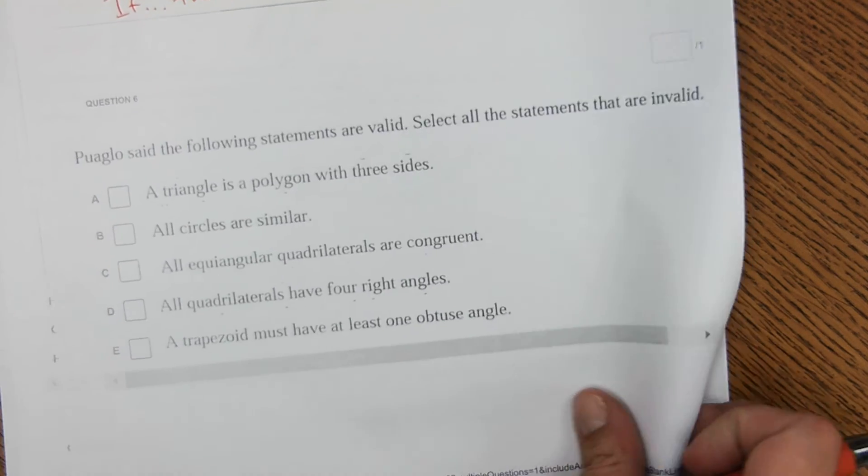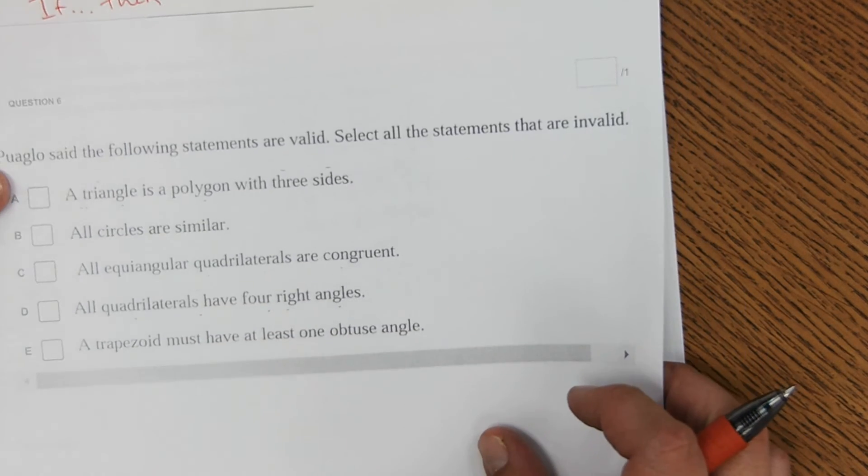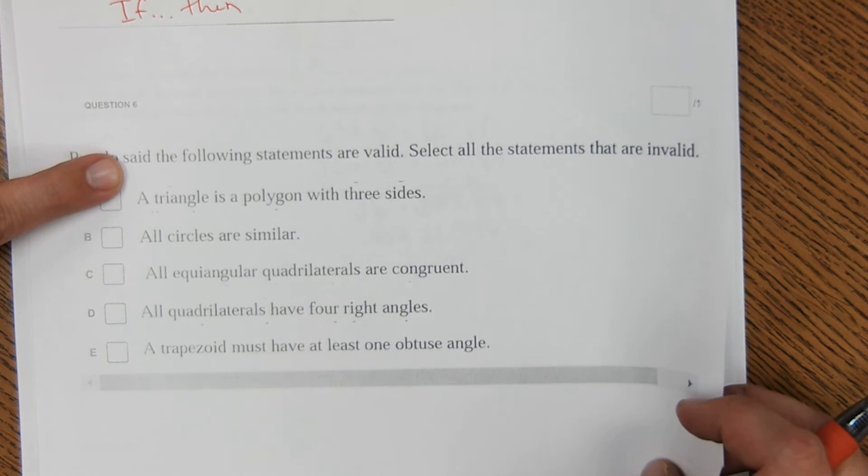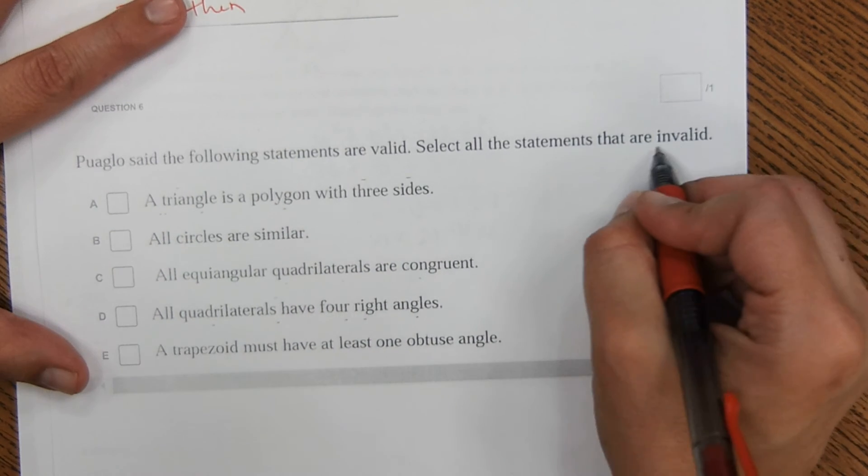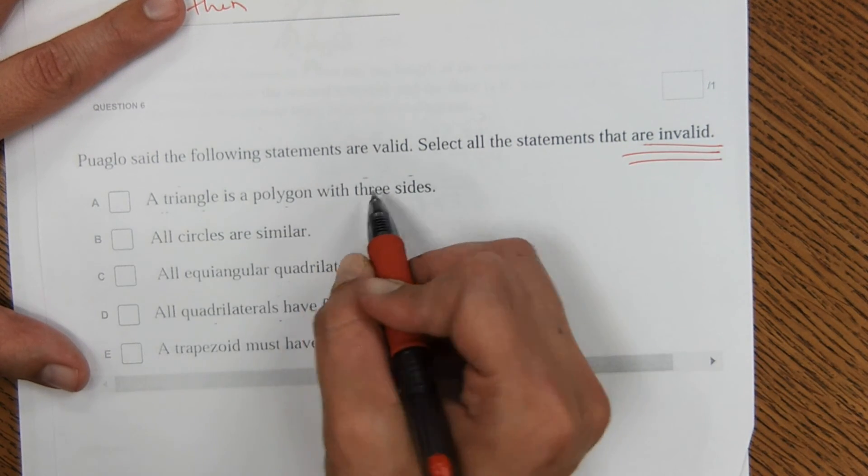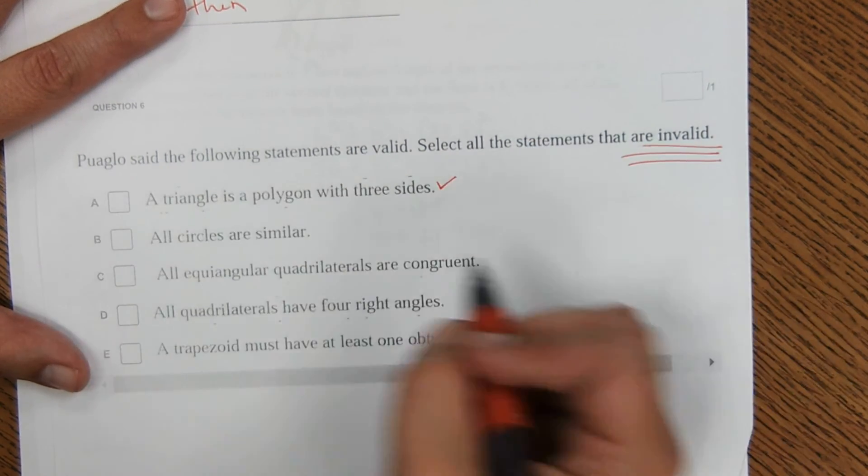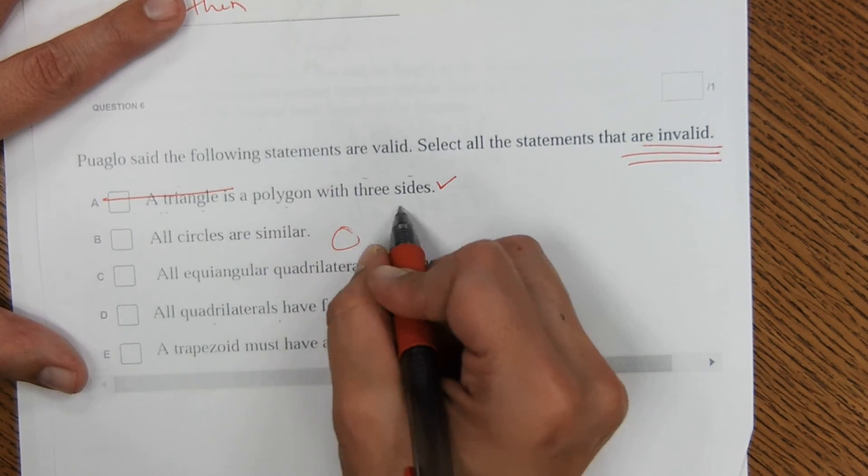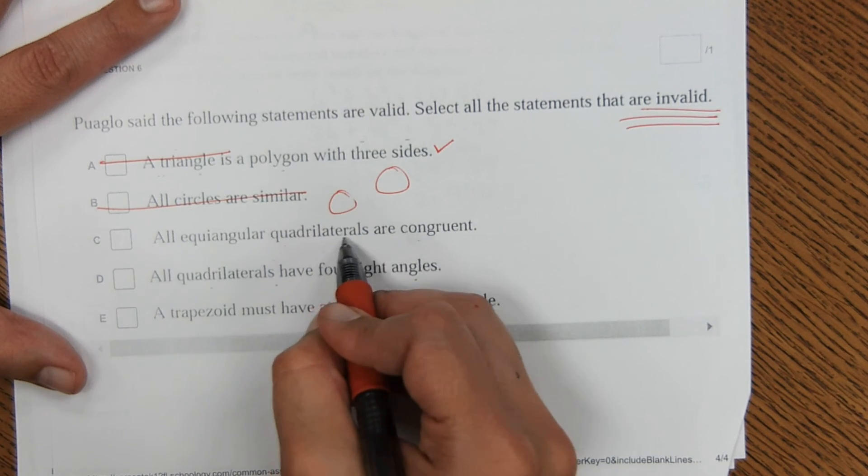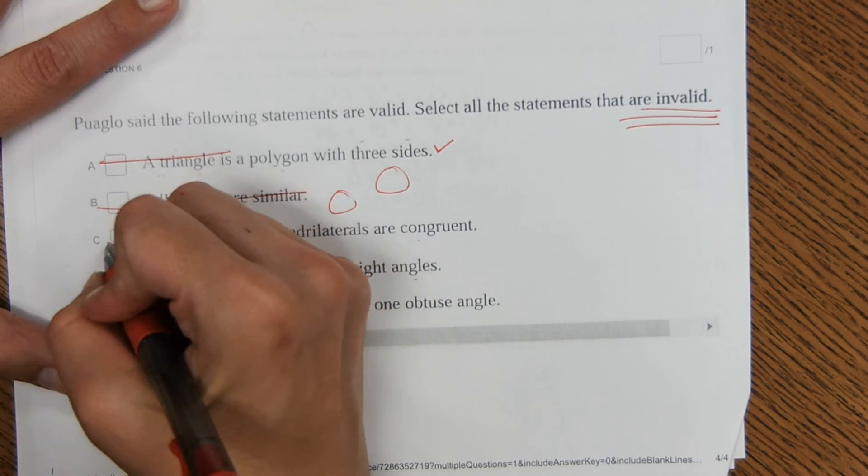Okay, and the last one of this entire series, Mr. P said the following statements are valid. Select all the statements that are invalid. This threw me off. It wants invalid statements. Triangle is a polygon with three sides. That is valid, so not what we're looking for. We need stuff that's not valid. All circles are similar. That is true, but we're looking for invalid statements. All equilateral triangles are congruent. That is invalid.